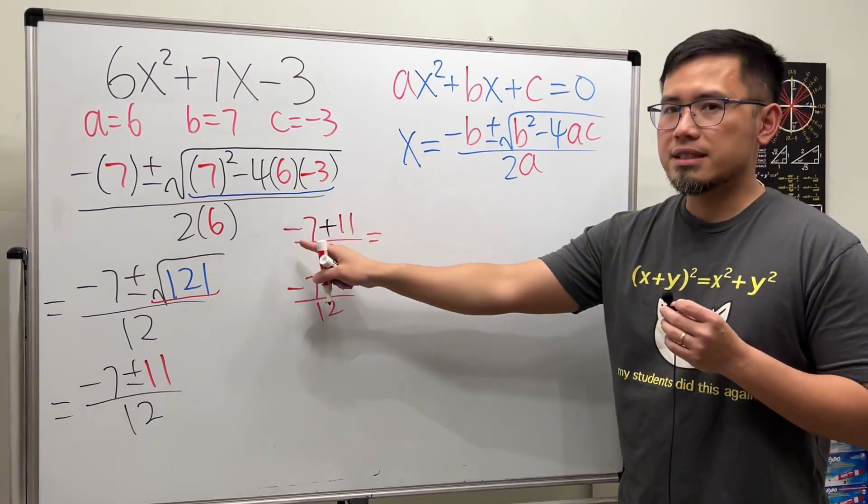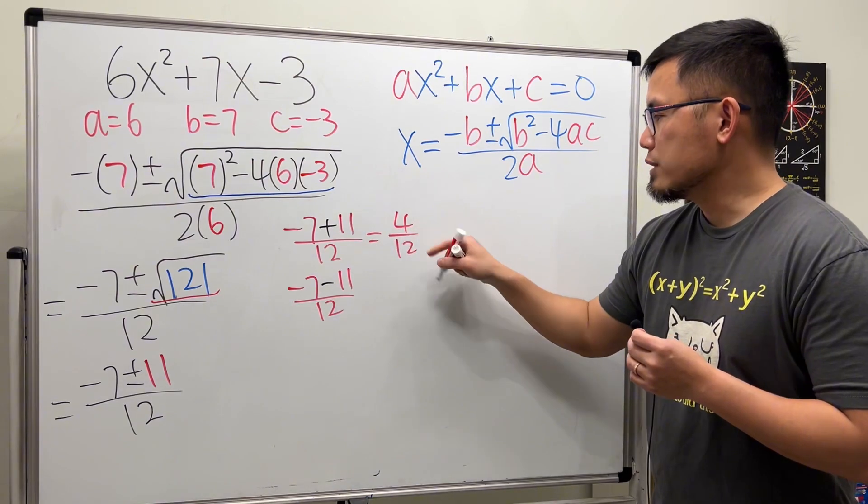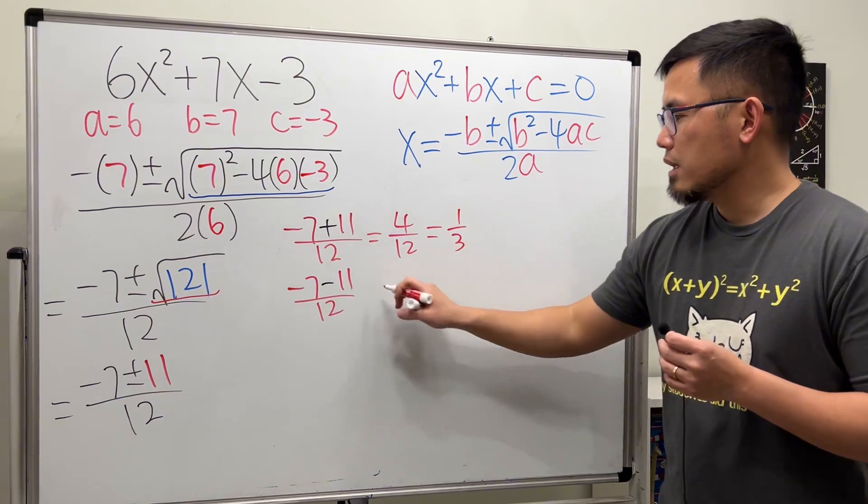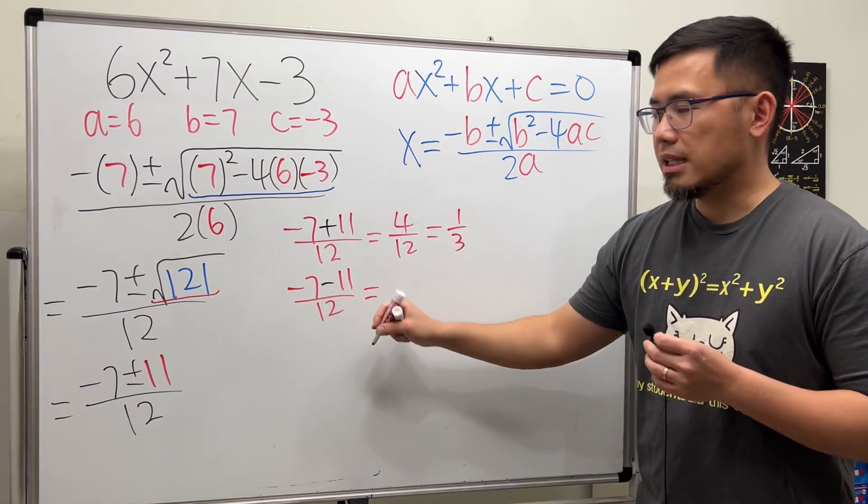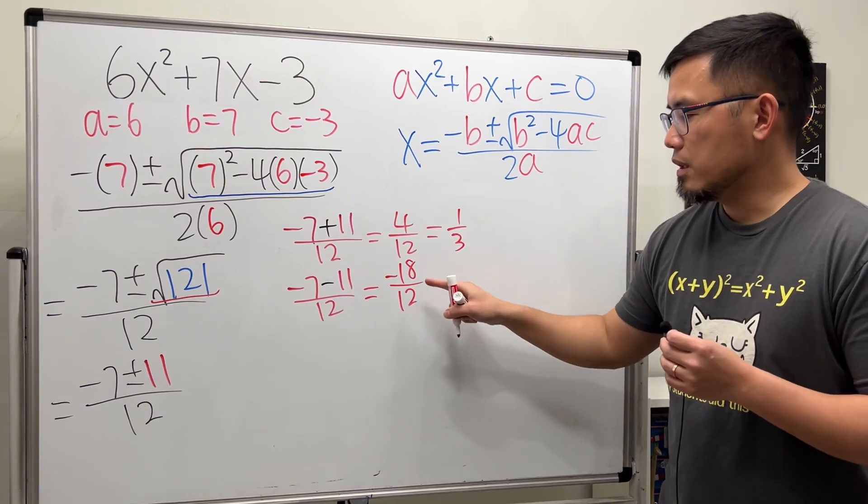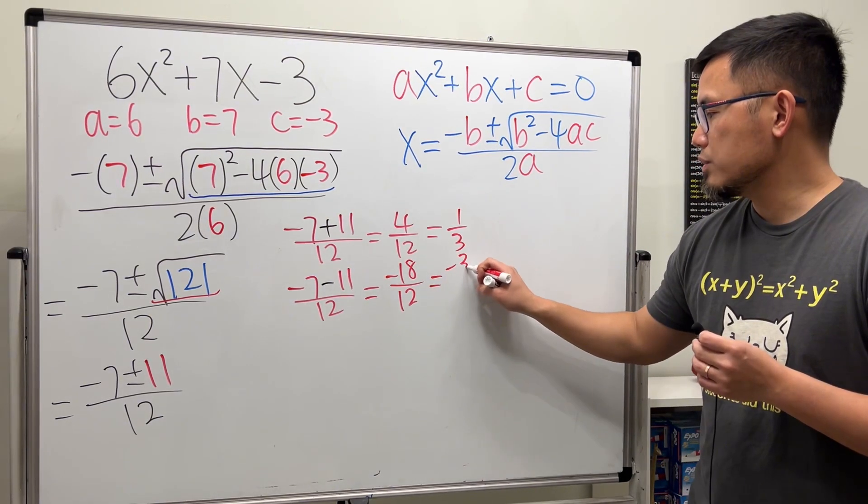Work this out first. Negative 7 plus 11 is 4 over 12. Reduce this by dividing by 4 divided by 4. We have 1 third. Negative 7 minus 11 is negative 18 over 12. Here we can divide it by 6 divided by 6. We get negative 3 over 2.